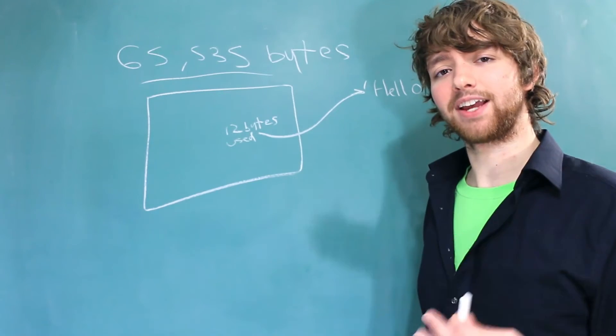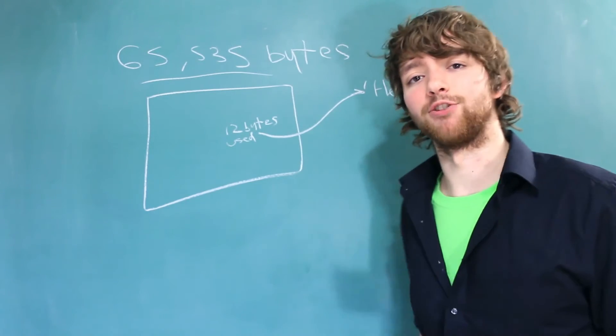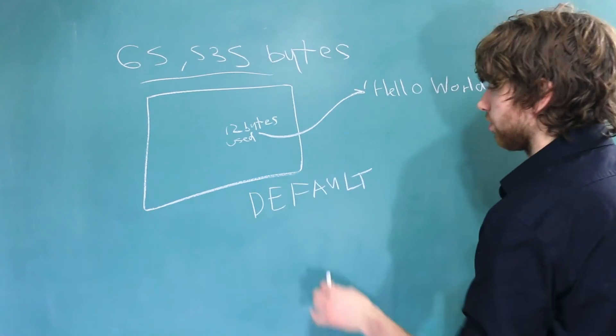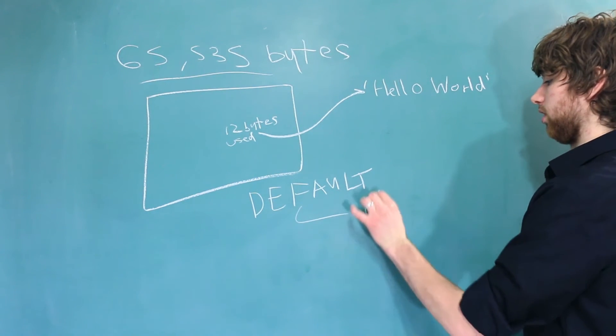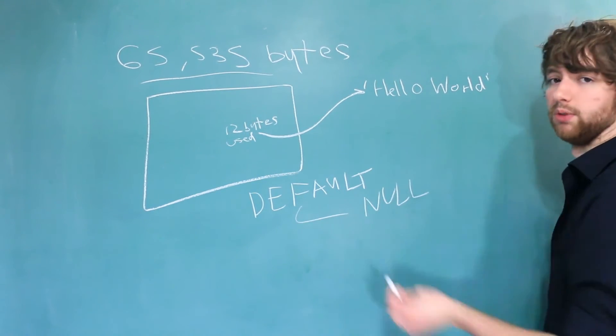And lastly, a text column does not allow for a default other than null. So the only option for the default for a text column is null. But for varchar, we can do anything we want.